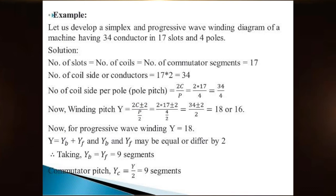Let us develop a simplex progressive wave winding having 34 conductors in 17 slots and 4 poles. That means per slot there are 2 conductors — it is a double layer winding. Solution: number of slots equals number of coils equals number of commutator segments equals 17. Number of coil sides or conductors = 17 × 2 = 34.